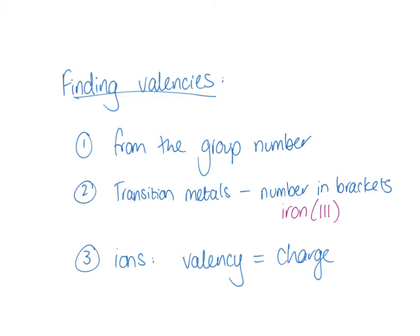And finally, if you're working with ions, then the valency is equal to the charge of the ion, just ignoring the plus or minus. So if the charge on the ion was plus two, then the valency is two. If the charge on the ion was minus one, then the valency of the ion would be one.